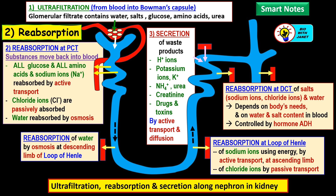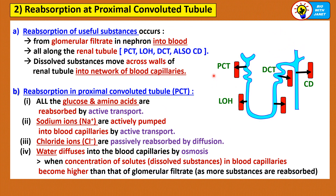Here are the notes for reabsorption. Reabsorption of useful substances occurs from the glomerular filtrate in the nephron into the blood. This occurs all along the renal tubule, which consists of the PCT, proximal convoluted tubule, LOH or loop of Henle, and DCT, distal convoluted tubule. Along these parts there is reabsorption of different substances. The dissolved substances have to move across the walls of the renal tubule into the network of blood capillaries.